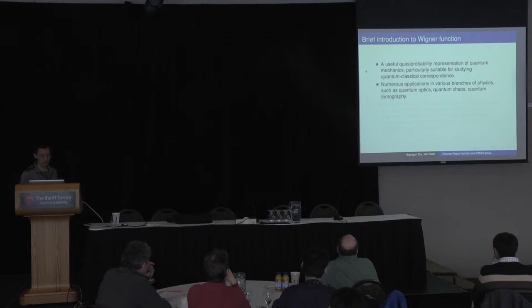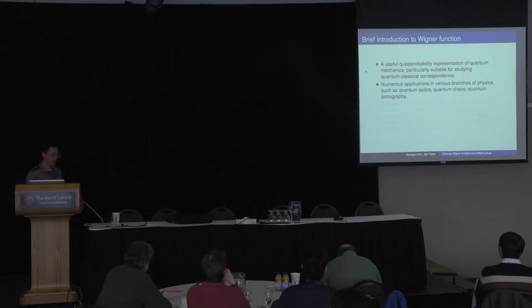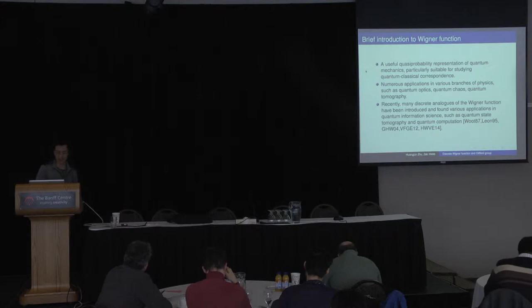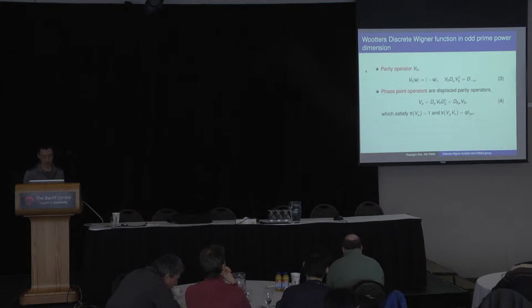I'll give a brief introduction about discrete Wigner function. This was originally introduced by Wigner in the 1930s to study quantum corrections to thermodynamics. It is a very useful quasi-probability representation of quantum mechanics and has many applications. Originally this was mostly studied in the continuous scenario, but recently the main discrete analog of this function was introduced. The most famous one was introduced by Wootters in 1987, and later there are many variants, but this one is the most interesting.